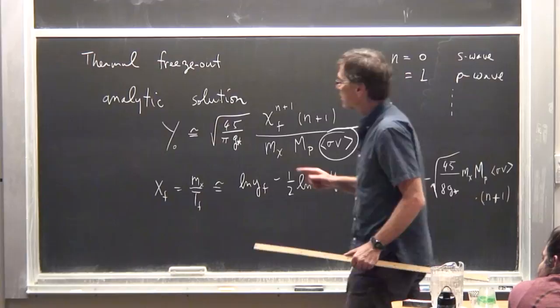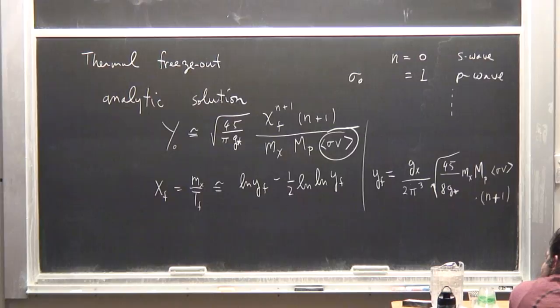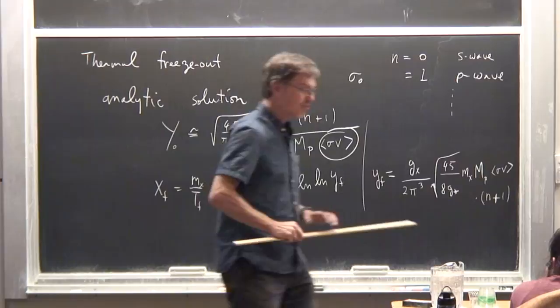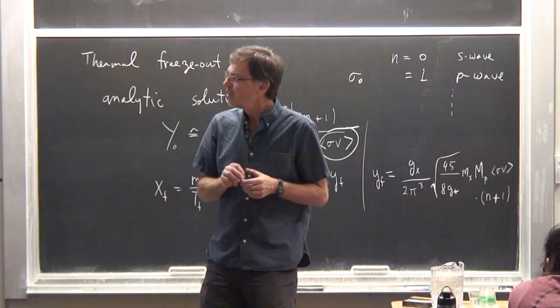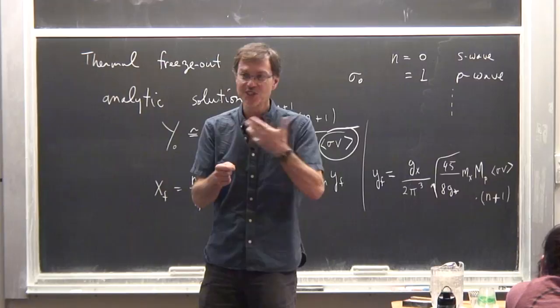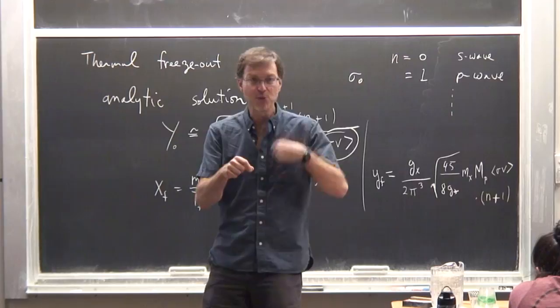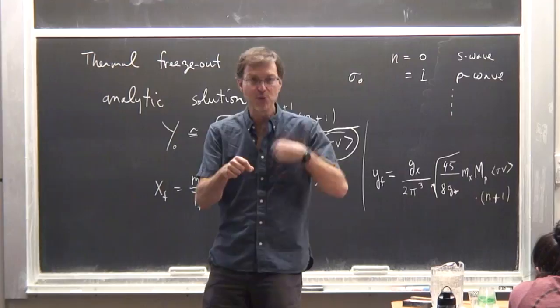This is the right number for self-conjugate dark matter. If it's Dirac dark matter or a complex scalar, you need to double it. There's an easy way to understand that: if you think about a dark matter particle whose relic density is determined by its rate of annihilation on other dark matter particles, a Dirac particle can only interact with half the dark matter particles in the bath, so the rate of interaction goes down by a factor of two. You need to boost the cross-section accordingly to compensate.